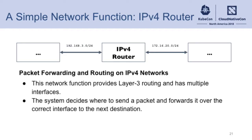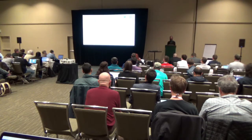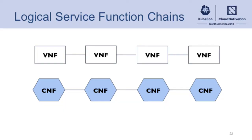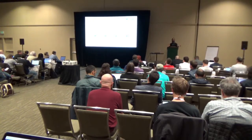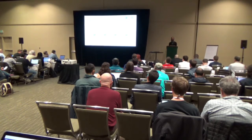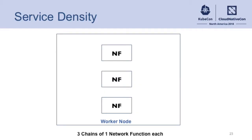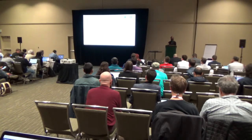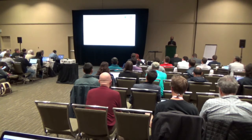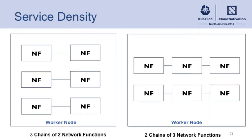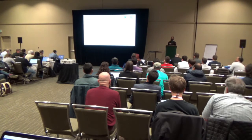The next thing is you need to know what type of network functions. What we're looking at in these tests are a simplified set where we're looking at an IPv4 router forwarding packets over multiple interfaces, and you create service function chains — sets of services that you link together to create some functionality. We can look at density: three chains with one network function each, three chains with two network functions, and two chains with three network functions. These latter two are using all the cores on the Packet machine on a single socket.